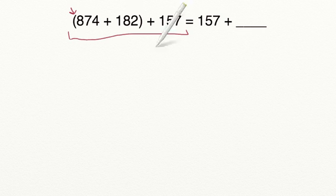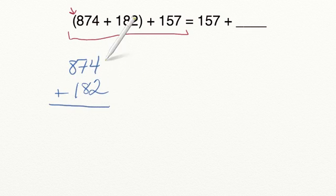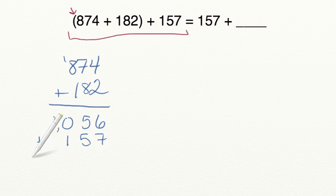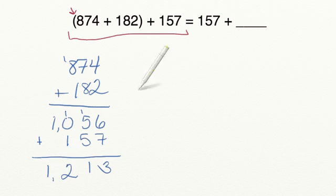So let's go ahead and add our left-hand side. 874 plus 182. 4 plus 2 equals 6. 7 plus 8 equals 15. So we're going to regroup our 1. 8 plus 1 equals 9. Plus 1 equals 10. So the value in our parentheses is equal to 1056. But let's figure out how much this entire left-hand side has. So 1056 plus 157. 6 plus 7 equals 13. 5 plus 5 equals 10. Plus 1 equals 11. 1 plus 1 equals 2. And 1 plus 0 equals 1. So the left-hand side of this equation has a value of 1,213.